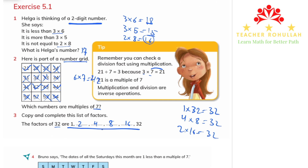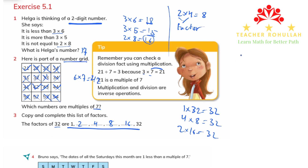Since this lesson focuses on multiples and factors, I want to explain both terms. When we multiply two numbers — for example, 2 times 4 equals 8 — the numbers being multiplied are called factors. A multiple is the result: 8 is a multiple of both 4 and 2. So 8 is a multiple of 2 and at the same time a multiple of 4.